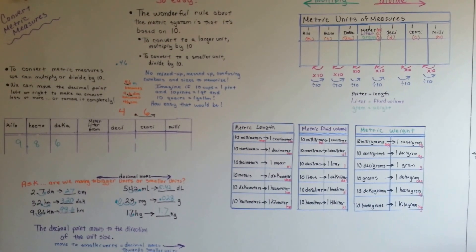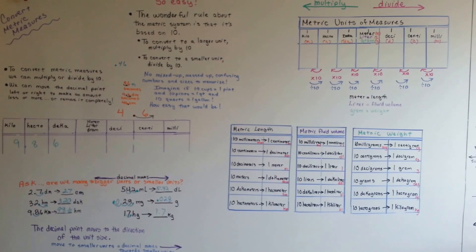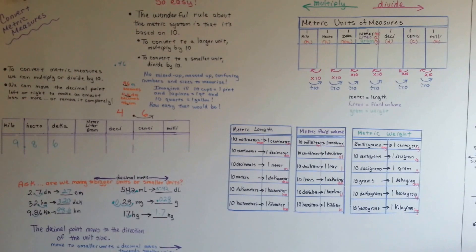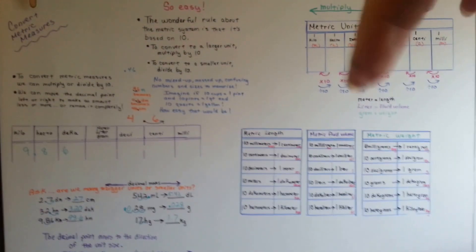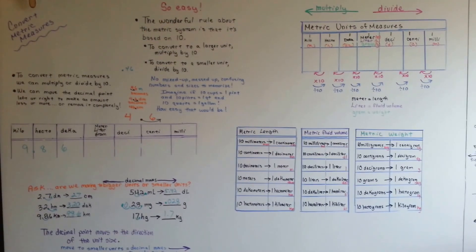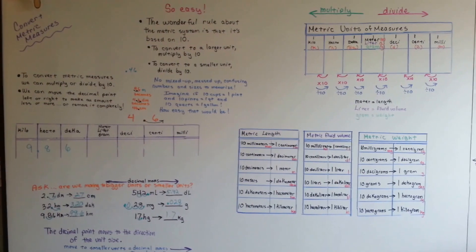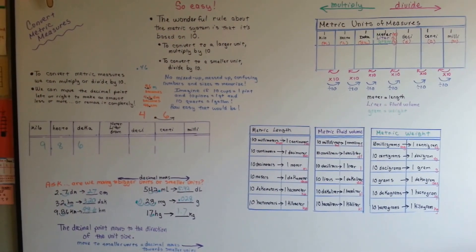So this is everything you need to know about converting the metric measures. Just remember milli, centi, deci, and then choose if you're going to use meters, liters, or grams, and then deka, hecto, and kilo. And if you can remember these guys up here, and that meter is length, liter is fluid, and gram is weight, you'll have them all memorized and down pat. See you next video. Bye.